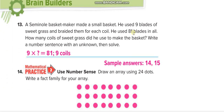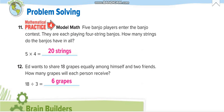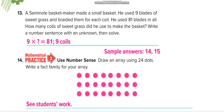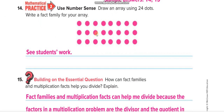Next, nine times what gives you eighty-one? Nine times nine equals eighty-one. In question fourteen, there are twenty-four dots arranged in three rows — how many columns? Count them: one through eight, so eight columns. Write the fact family for this dot array in the comment box.